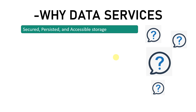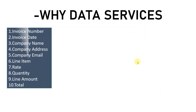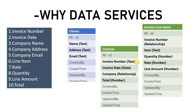With data services we get secure and accessible storage. Next, we can define, modify, and extend business entities. Going back to our example, we were extracting data from the PDF: invoice number, invoice date, company name, line item, rate, line amount, and total. All this data can be divided into categories — company name, company email, and company address relate to the company entity; invoice number and invoice date relate to the invoices entity.